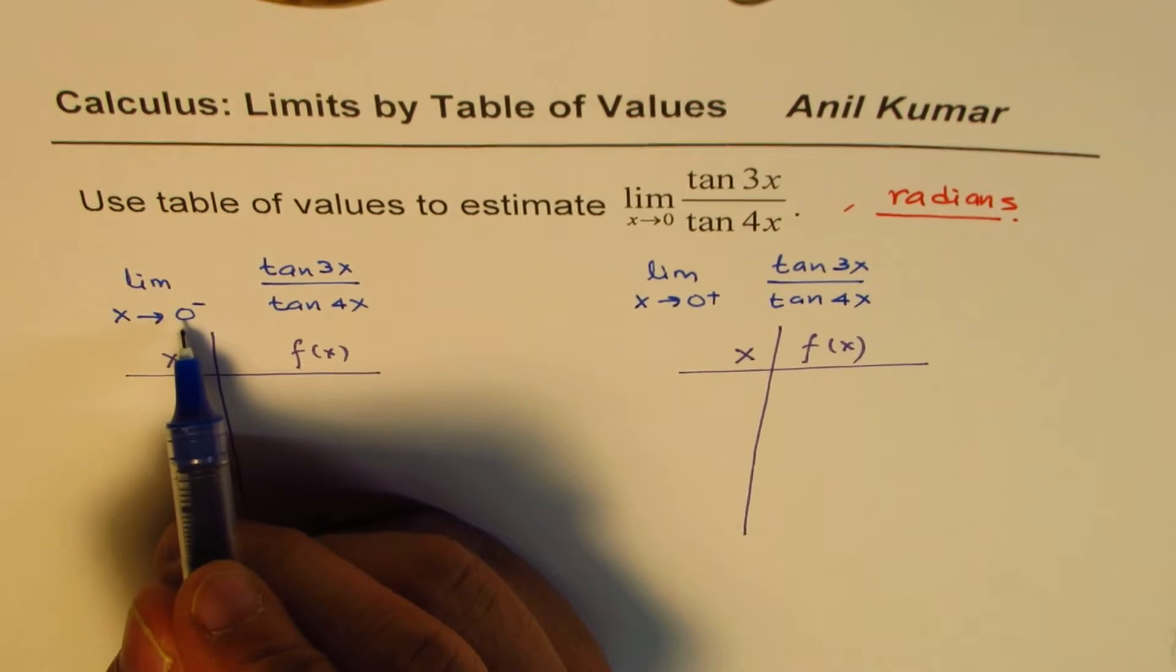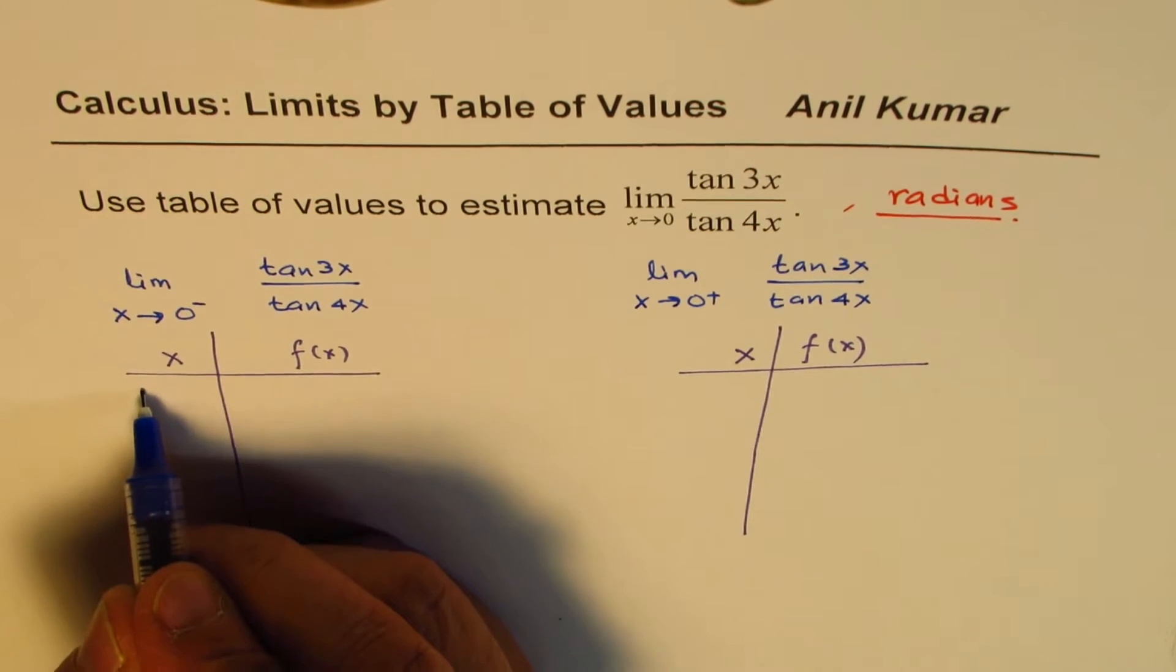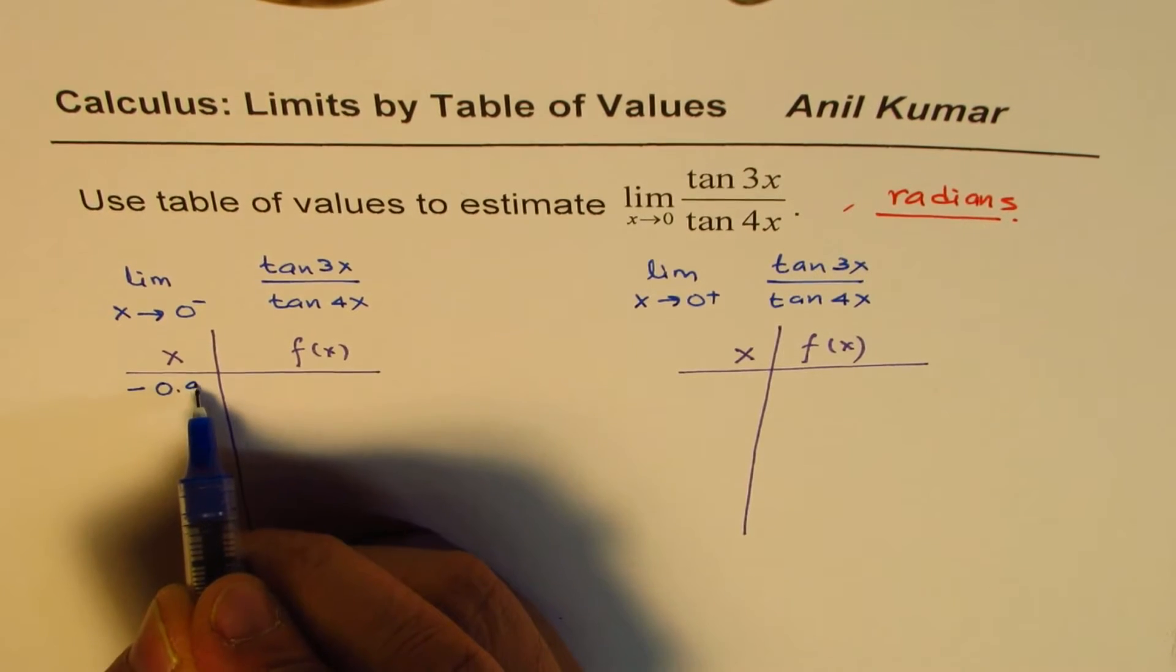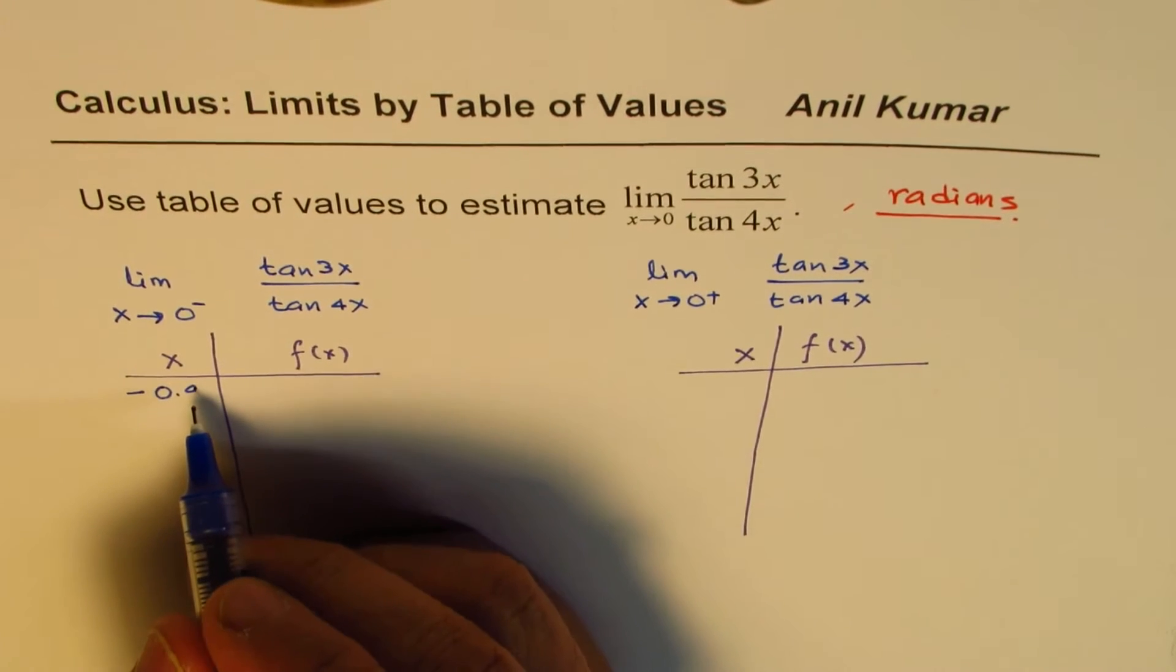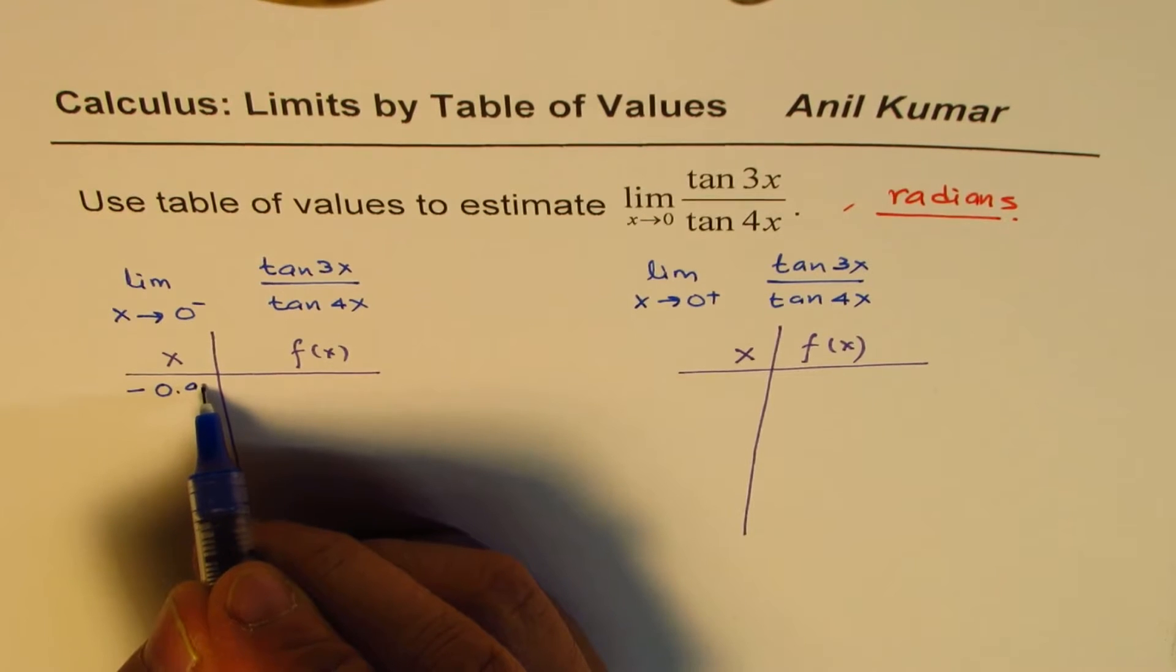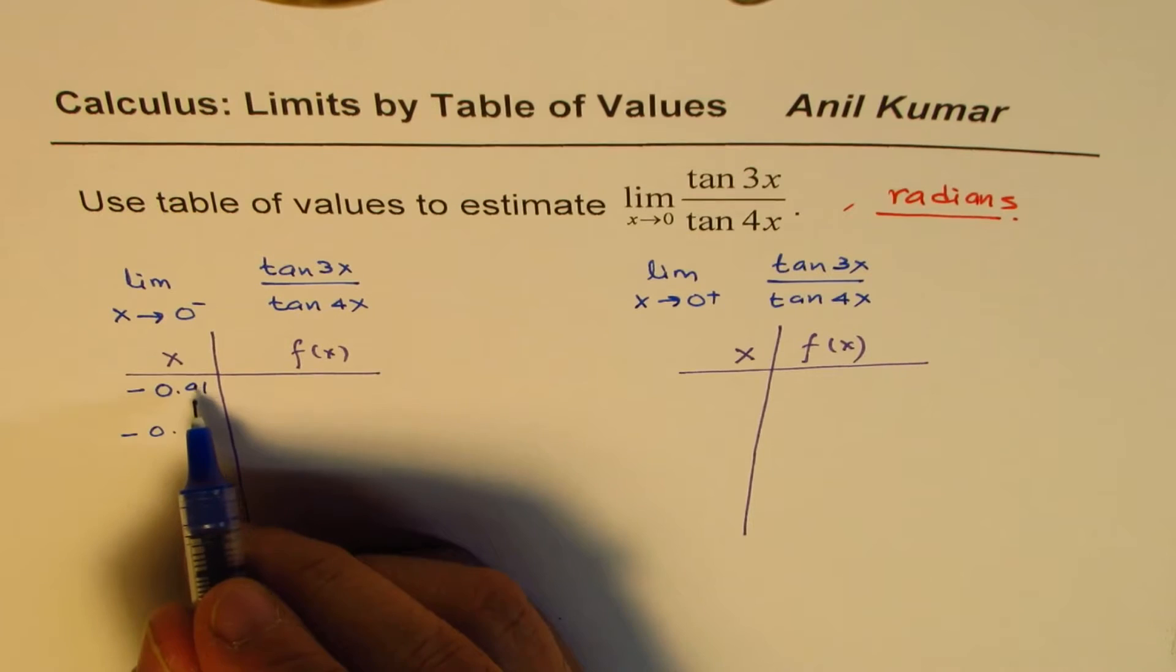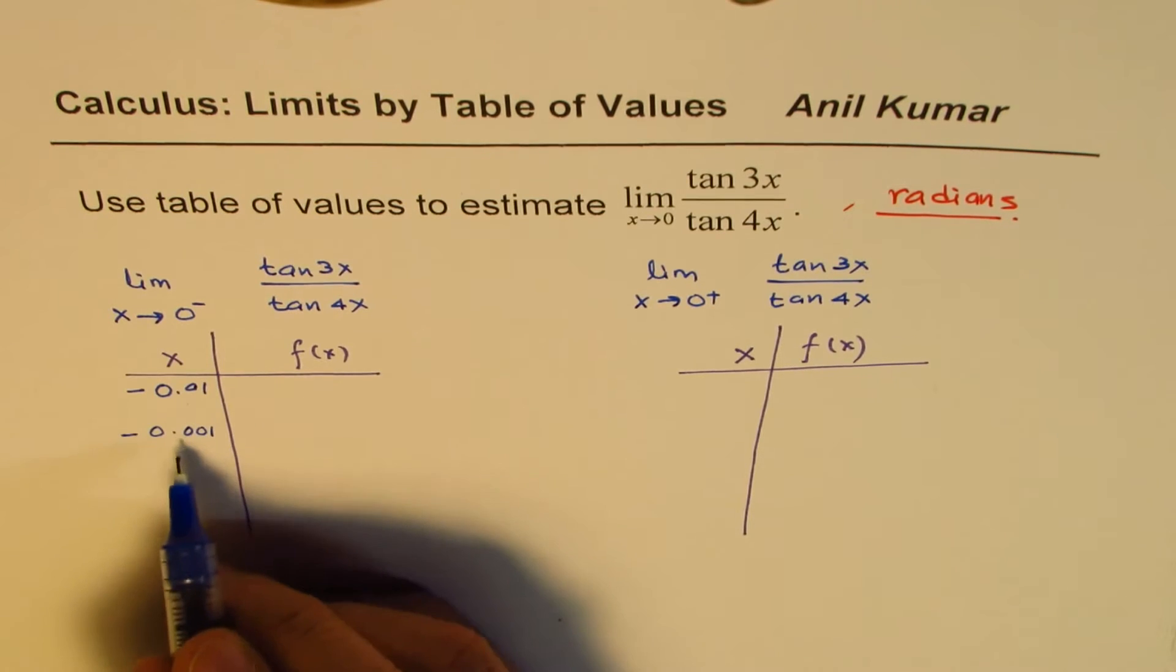When you say close to 0 from the left side, that really means that it is like minus value. Minus 0.9. So 0 point, you can say very close to 0, it is minus 0.01. You can say minus 0 point, you could start with 0.9, come to 0.1, and then can move like this also.